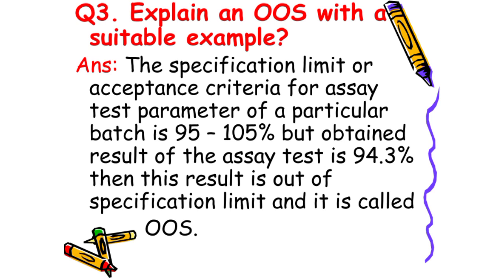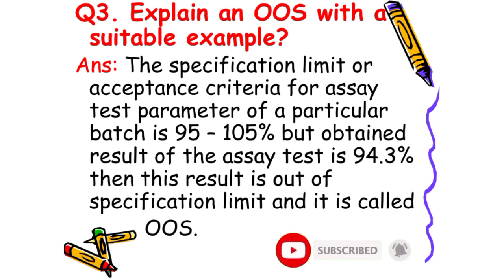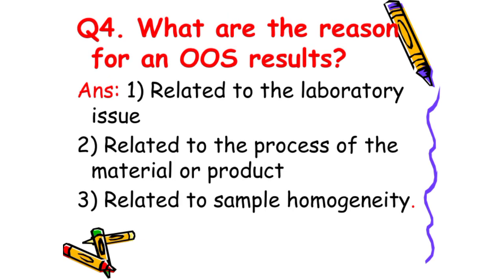Next: Explain an OOS with a suitable example. The answer is: suppose the specification limit or acceptance criteria for the assay test parameter of a particular batch is 95 to 105 percent, but the obtained result of the assay test is 94.3 percent. Then this result is outside the specification limit and it is called an OOS result.